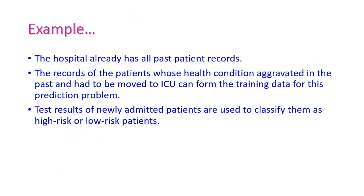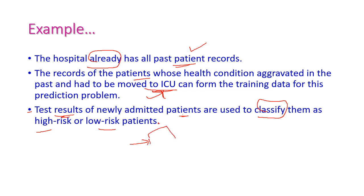The hospital already has all the patients' records. If the patient's health condition is very dangerous, they will immediately be moved to ICU for better treatment. The test results of newly admitted patients are used to classify them as high risk or low risk. If the patient is a low risk patient, they will go to the general ward; otherwise, if high risk, they will be immediately shifted to the ICU ward.